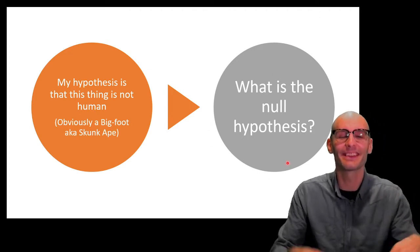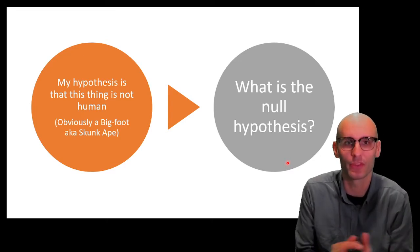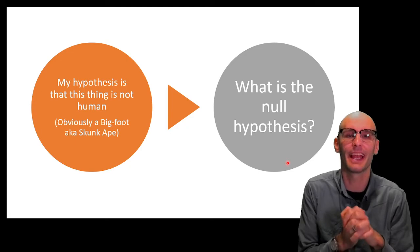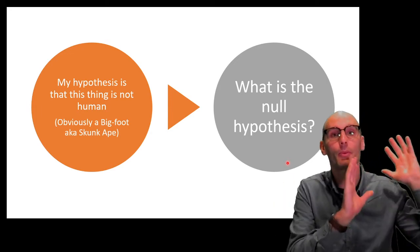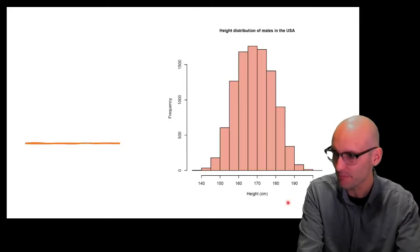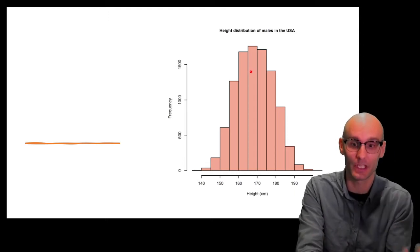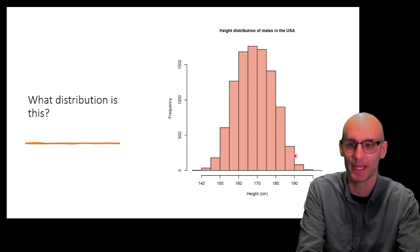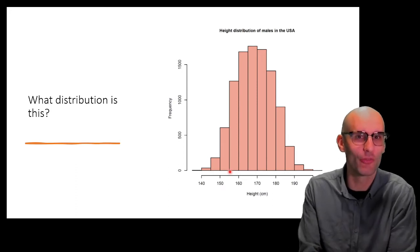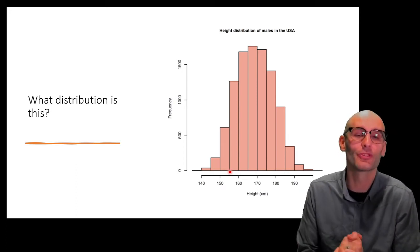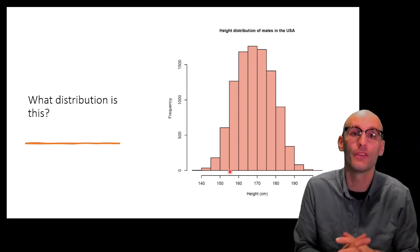My hypothesis is that this thing passed out in the forest is not human — it's obviously a Bigfoot, aka Skunk Ape. So what is the null hypothesis? The null hypothesis is that it's a regular human male, sampled from the normal population — the same population that all other human males are sampled from. The null hypothesis is always that it's not a special population; we're all sampling from the same population. So this animal is a sample from the human male population — that's the null hypothesis. And here we have the distribution of heights in males.